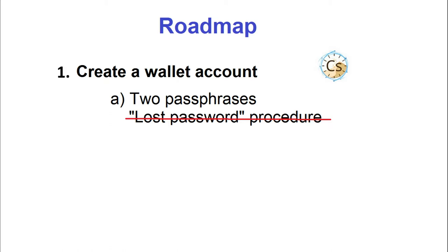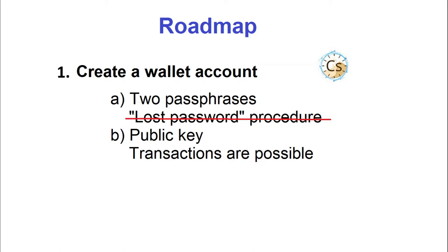If you forget one of your passphrases, no one will be able to give you access to your account again. After following the creation procedure, you receive a public key which serves as an ID for your account. At this stage you can give and receive Junés and make transactions, but you do not receive the universal dividend because you are not yet in the Web of Trust.